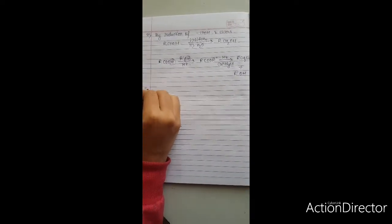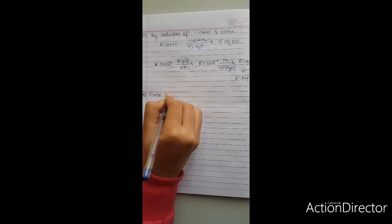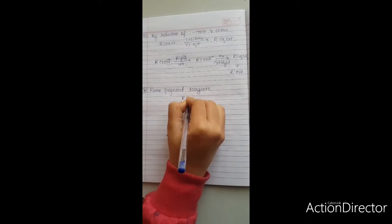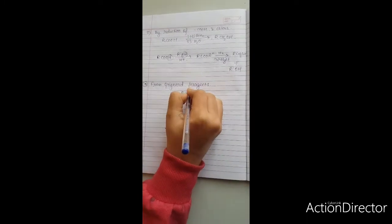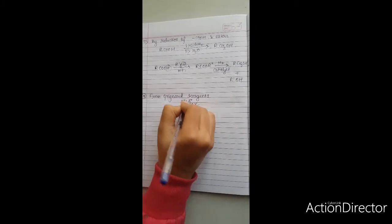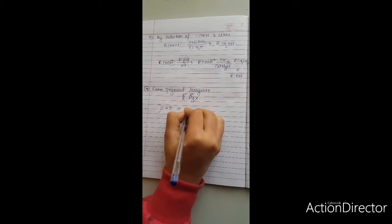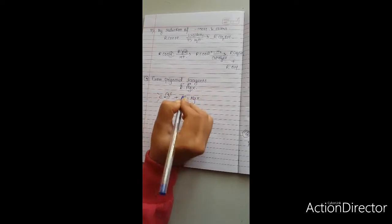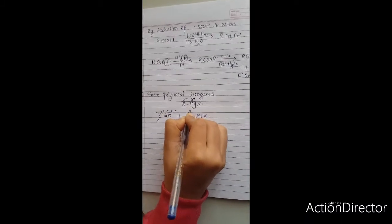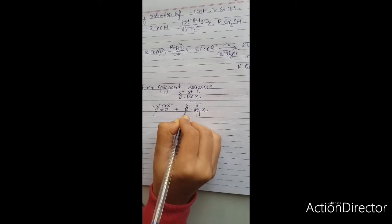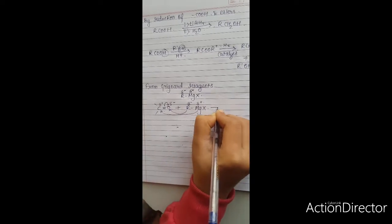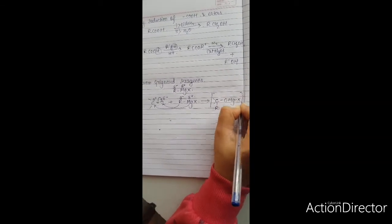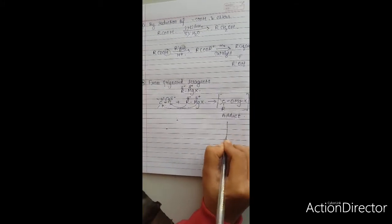Our third method is from Grignard reagent. The Grignard reagent is RMgX — the R group is partially negative and Mg is partially positive. On reaction with a carbonyl compound, the pi electrons shift to oxygen, developing a partial negative charge on oxygen. The R group from RMgX joins to the carbonyl carbon and MgX joins to the oxygen, forming an intermediate called the adduct.